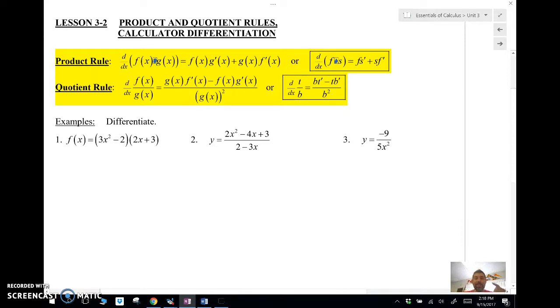The quotient rule, however, if you're taking two functions, one divided by the other, you're going to take the second times the derivative of the first minus the first times the derivative of the second divided by the second squared. There's a neat little rhyme that you can learn. It's low d high, so that's low, that's g of x times the derivative of the top, minus high d low, that would be the top times the derivative of the bottom. Square the bottom.